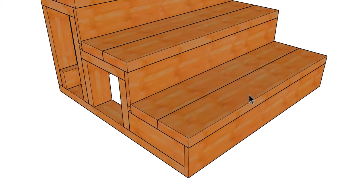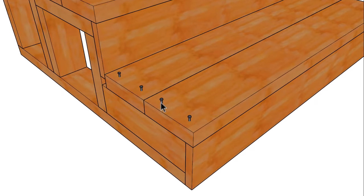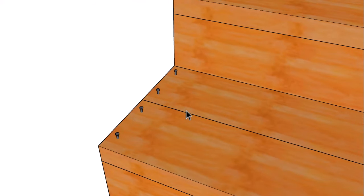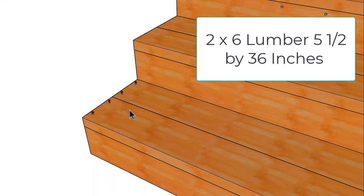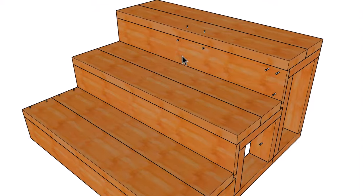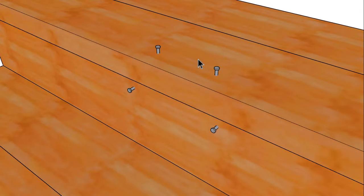The treads can be attached with 16d nails or screws that are at least three inches long. You can always put three nails or three screws per board where I only have two.